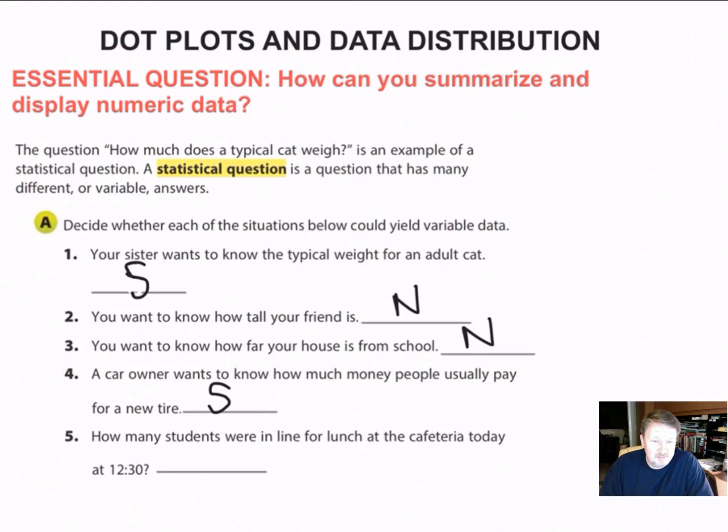And then finally, how many students were in line for lunch at the cafeteria today at 12:30? Well, guess what? That is not a statistical question because there's a certain number of people that are in line at 12:30. So those are examples of statistical and non-statistical questions.